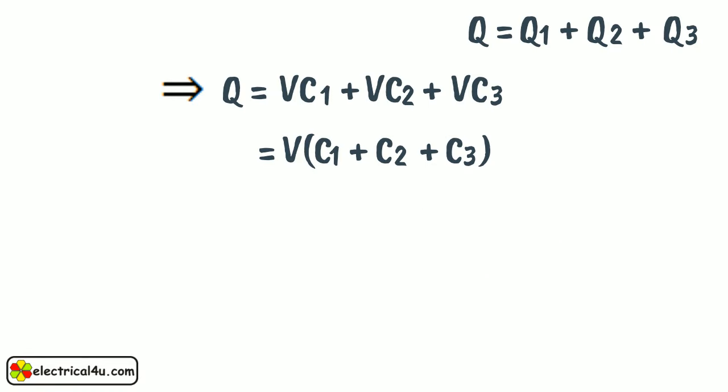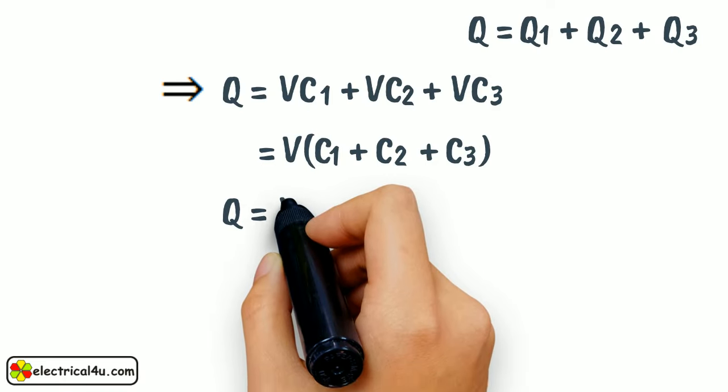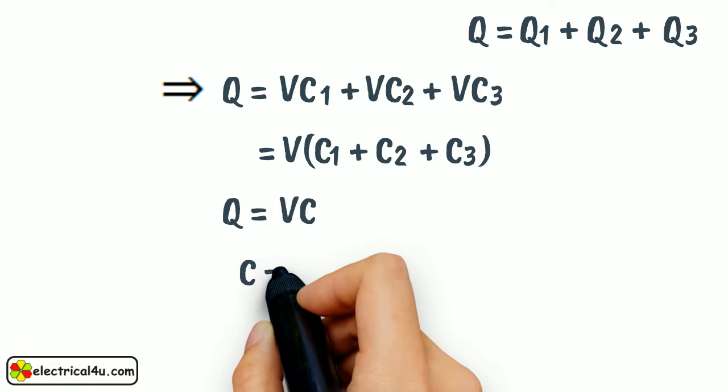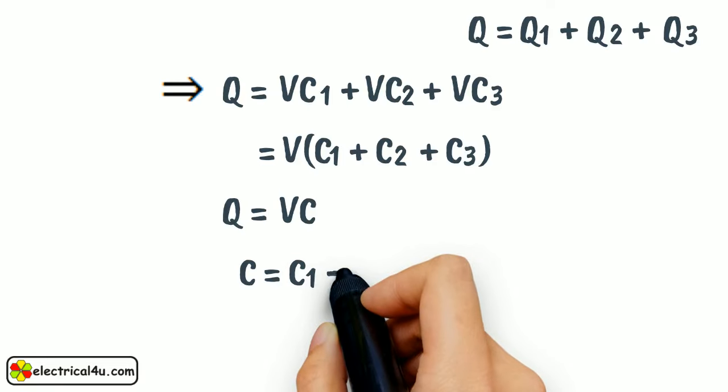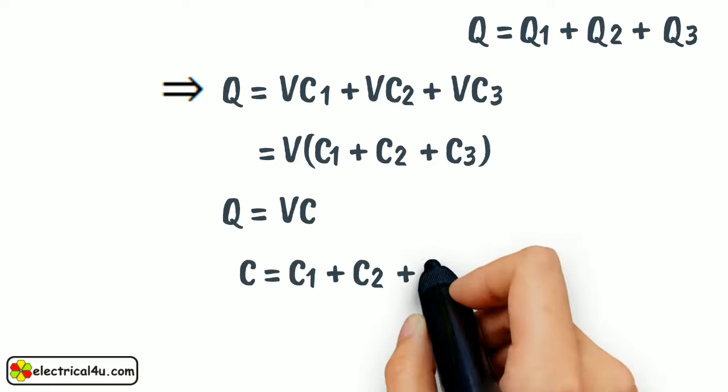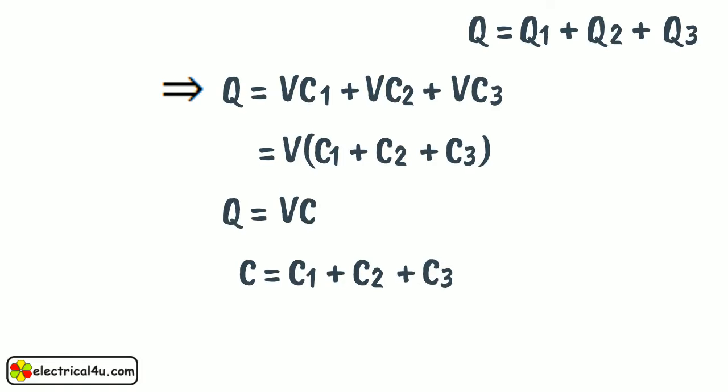If we assume equivalent capacitance is C, then total charge Q will be V into C. From these two equations we can get C equals C1 plus C2 plus C3. Hence, capacitance of all capacitors connected in parallel will be just added to get equivalent capacitance of the parallel combination.